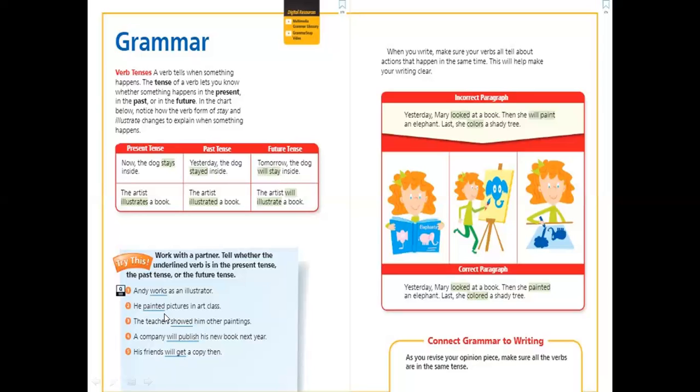Let's see this exercise. Andy works as an illustrator. The underlined verb, I need you to tell me whether it's present or past or future. Andy works as an illustrator. Works here is present or past? Of course it's present because we are using s with the verb if I'm talking about singular in the present.